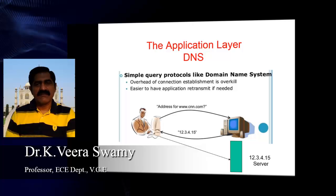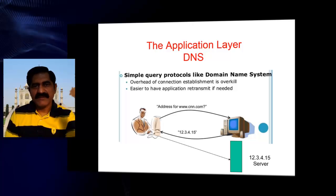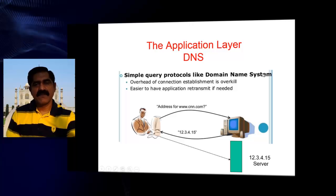Good morning everybody. Today we are going to discuss about the application layer. When you take the total network hierarchy and its layered structure, the application layer is the top layer. Within that application layer, you have one system that is called DNS — the Domain Name System. So why do you need this DNS? What is the importance of DNS?